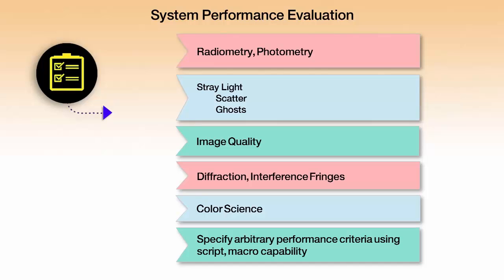We may look at image quality — things like modulation transfer function, for example. Diffraction and interference, actually looking at fringe patterns and point spread functions. Polarization evaluation where we want to see what polarization states exist in the light. Color science — here thinking about fundamental things maybe confined to chromaticity, or mapping to other color spaces like the visual color space or the CIE LUV space. And we can also create our own evaluations based on anything we can describe mathematically using ASAP scripting.